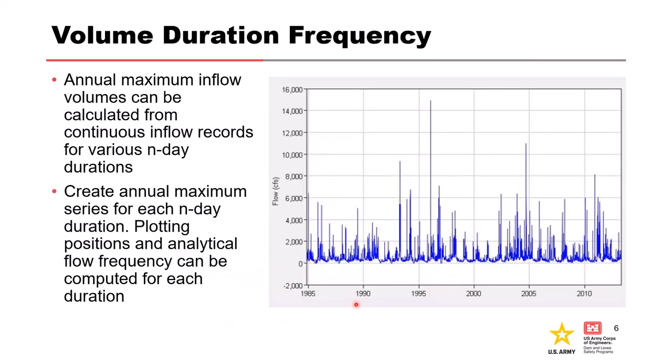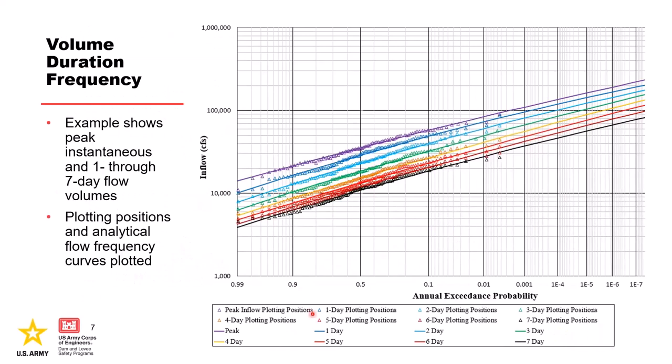Annual maximum inflow volumes can be calculated from continuous inflow records for various n-day durations, and we create an annual maximum series for each n-day duration of concern. Plotting positions and analytical flow frequency can be computed for each duration just like we've been computing for annual instantaneous peaks. The same process is used for annual maximum instantaneous peak flows.